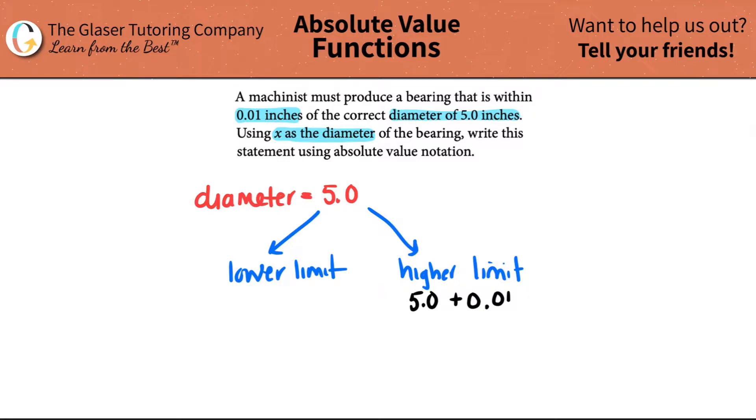And then the lower limit would be getting that correct diameter and subtracting 0.01. Now the actual diameter that you get must be within the lower limit and the higher limit. So technically, if I needed to put where my actual diameter was going to be, it's going to be in between the lower limit and the higher limit.